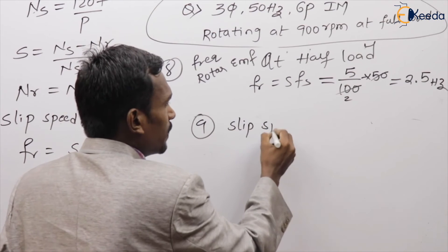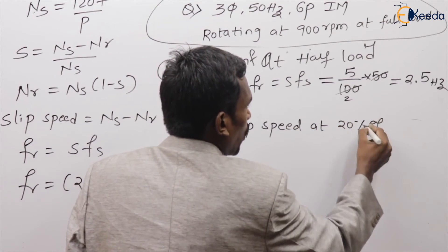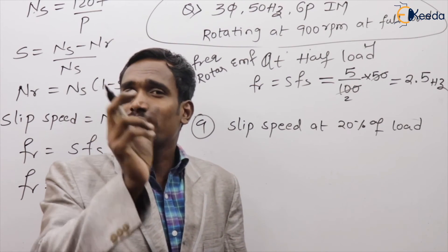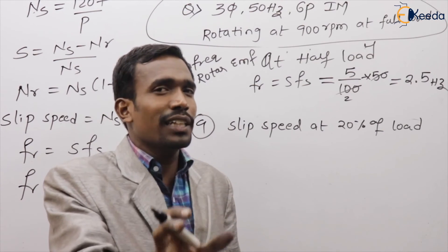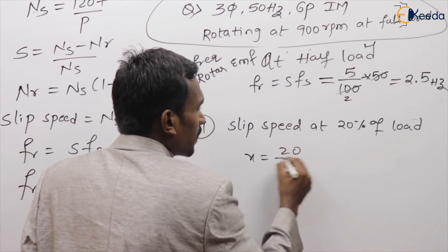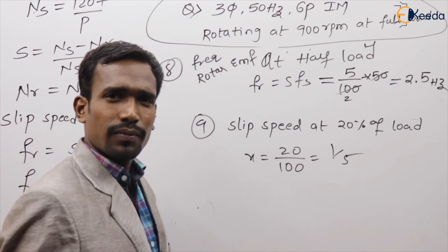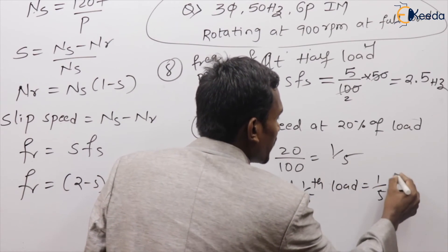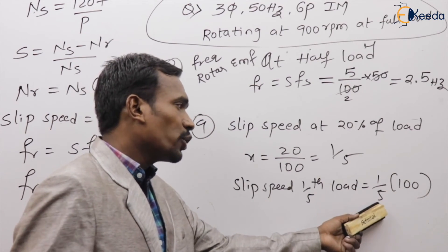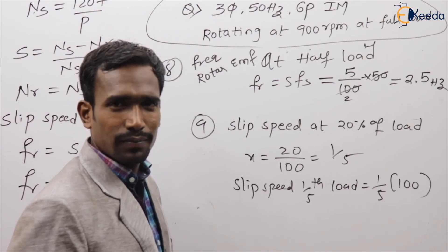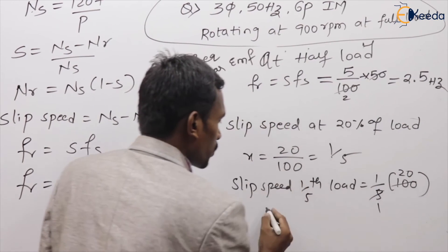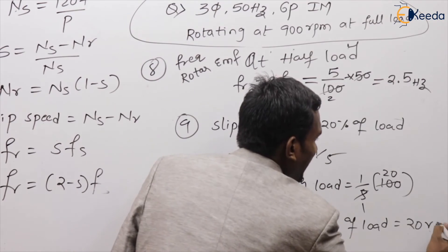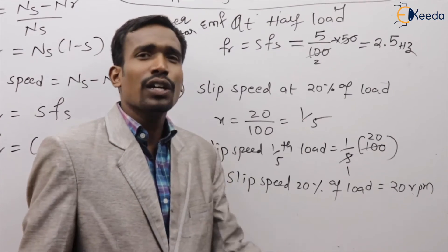Ninth question: what is the slip speed at 20% of load? The Xth load slip speed equals X into full load slip speed. Here X is 20% which is 1/5, and full load slip speed is 100 RPM. So slip speed at 20% load equals 1/5 into 100 equals 20 RPM.